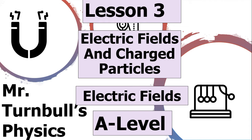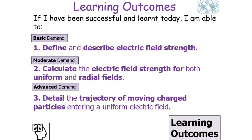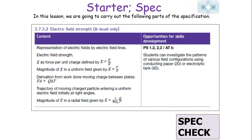Hello, and welcome to today's lesson looking at electrical fields and charged particles, which falls into the electrical fields topic of the AQA A-level physics course. In today's lesson, we're going to understand how electric fields can affect charged particles. We'll define and describe electrical field strength, understand how to calculate it for both uniform and radial fields, and look at the trajectory of moving charged particles entering a uniform electrical field — specification reference 3.7.3.2.